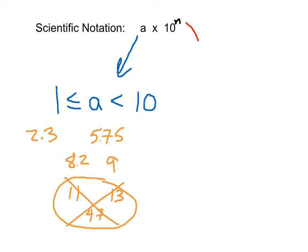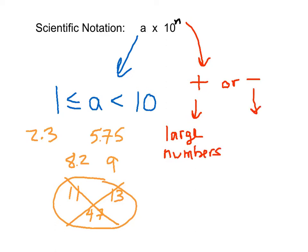The exponent n can be positive or negative. If it's positive, we're talking about large numbers — numbers greater than 1. If you're talking about a negative exponent, these are going to be small numbers. For example, if you're talking about the mass of a proton, you'll use a negative exponent because that's a very, very small number. And if you're talking about the weight of planet Earth, the exponent is going to be a positive exponent.